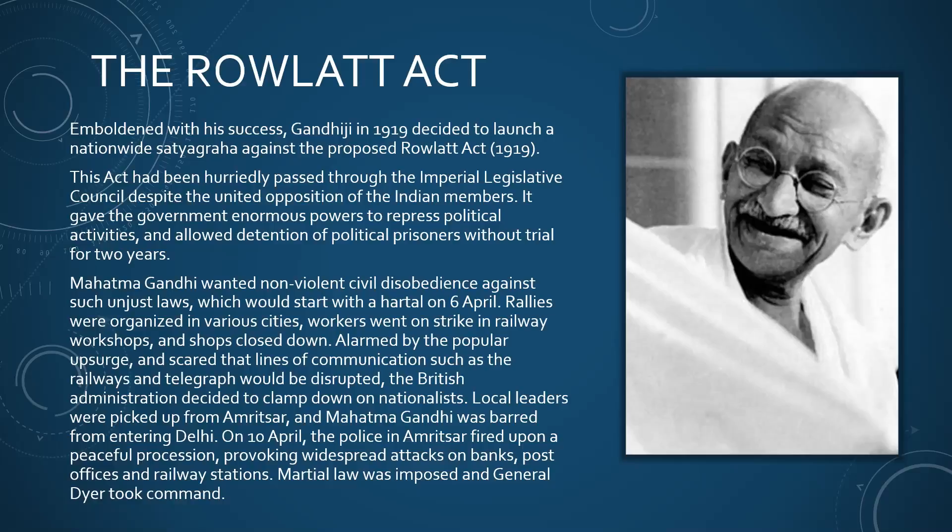Various rallies were organized in different cities, workers went on strike, and shops were closed down. The British government was alarmed by the huge popular upsurge and, fearing that all lines of communication like railway, telegram, telegraph, and postal systems would be disrupted, the British government decided to clamp down on nationalists. Local leaders were arrested from Amritsar and Mahatma Gandhi himself was barred from entering Delhi.